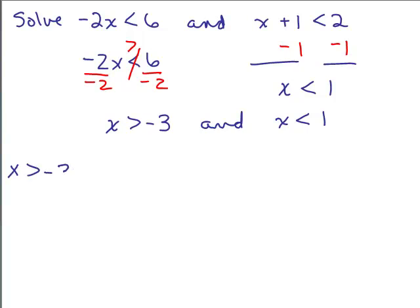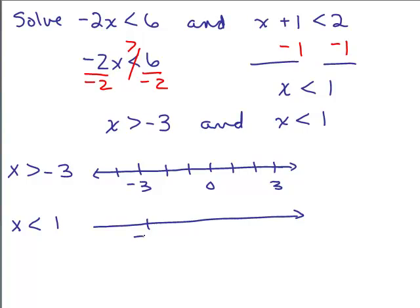Let's do the graph of each of them. For the first one, x is greater than negative 3, so I pick numbers bigger than negative 3 on the number line. We'll also graph x is less than 1 on another number line so we can see the overlap. X is greater than negative 3 goes off to the right, and x is less than 1 goes to the left of 1. Both are strict inequalities so there are no brackets. Where is the intersection — the overlap? It's in between negative 3 and 1, but not touching either of them.